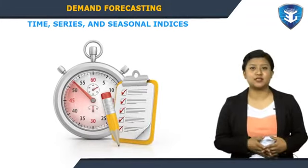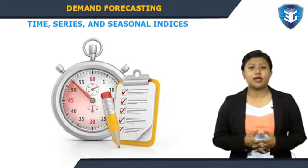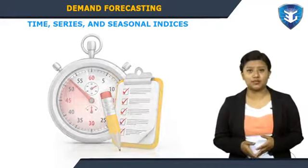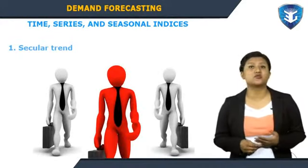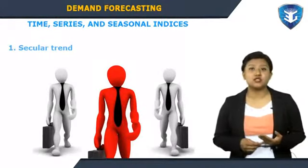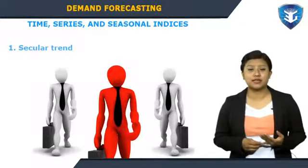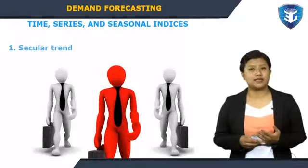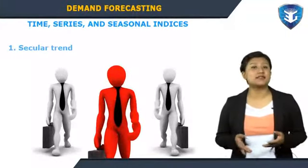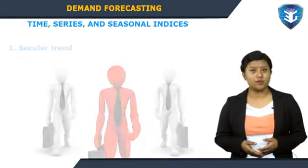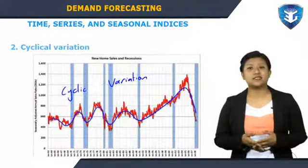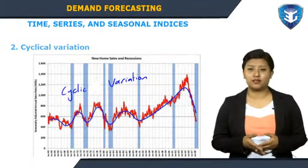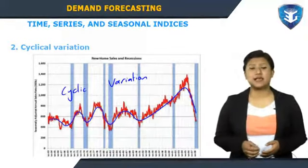Economic time series data can be broken down into the following components. Secular trend: the long-term trends of employment, stock prices, and other business and economic series follow various patterns — some move steadily upward, others decline, and still others stay the same over time. Cyclical variation: the second component of a time series is cyclical variation, representing a typical business cycle of prosperity followed by recession, depression, and recovery, with no fixed duration.